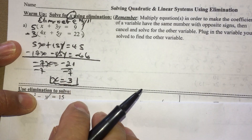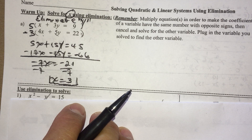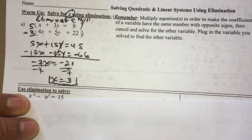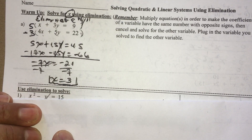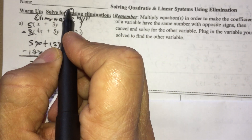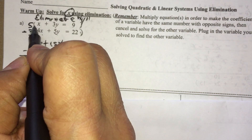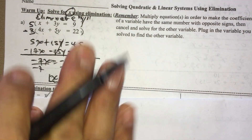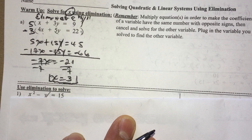X = 3 is my answer. I don't have to do anything else because I was asked to find the value of X. If I were asked to find the full solution, I'd plug X into one of the equations to find Y. Remember: if asked to find Y, you would eliminate the X's by multiplying the top equation by negative 4. But that wasn't the case. Let's jump into today's topic.